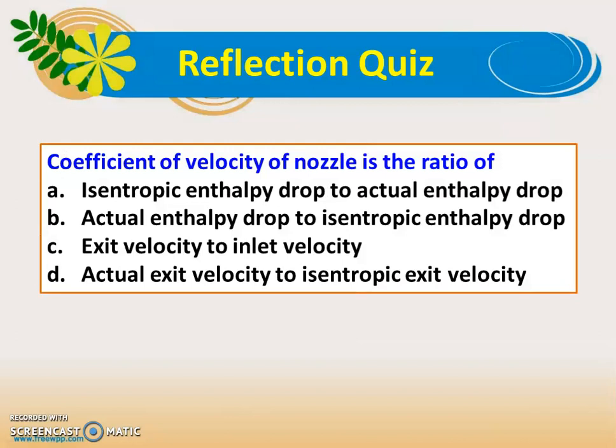Another quiz: the coefficient of velocity of the nozzle is the ratio of — four options given. The correct answer is D: coefficient of velocity of the nozzle is the ratio of actual velocity to the isentropic velocity at the exit.